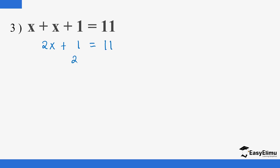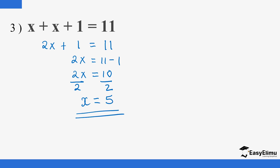Here we have x plus x, so we start by adding to get 2x plus 1 equals 11. So 2x equals 11 minus 1, which is 2x equals 10. Again you just divide both sides by 2, so 2 cancels 2 and x equals 5. It is very simple — collect the like terms together, take the numbers not containing variables to the right hand side, and keep the variable terms on the left hand side.